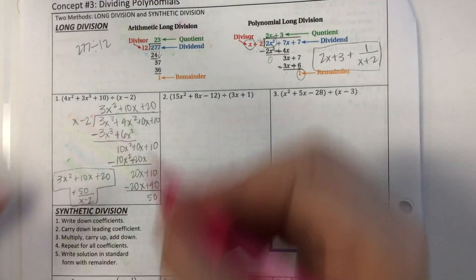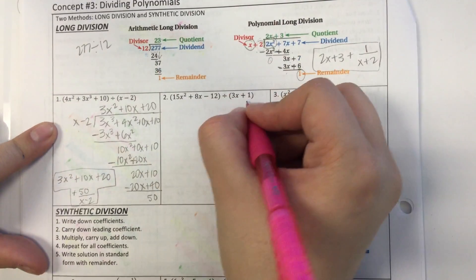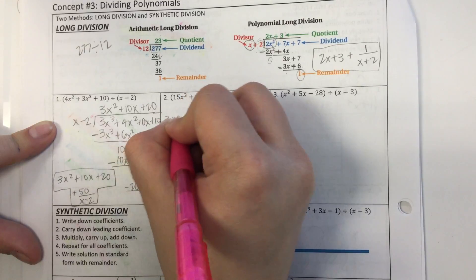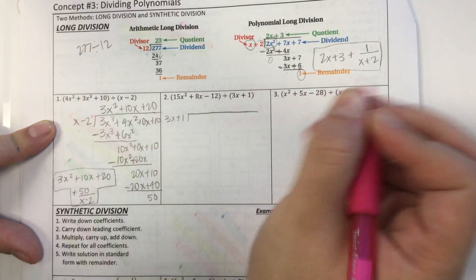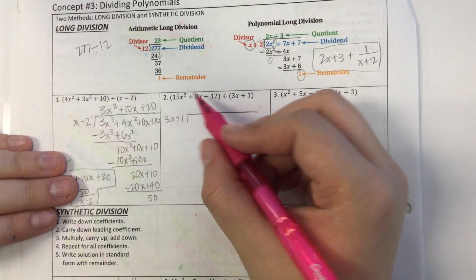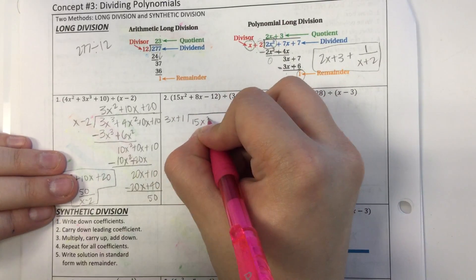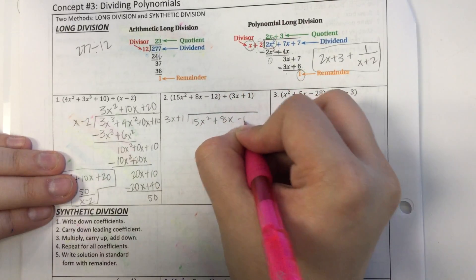Okay, number 2. We're going to do the same thing we did with number 1. So this time, my divisor is 3x plus 1. Give myself a little bit more room here. And my dividend is 15x squared plus 8x minus 12.